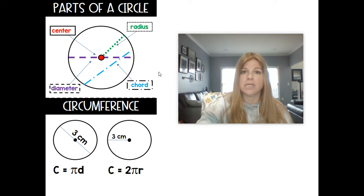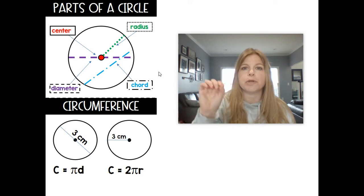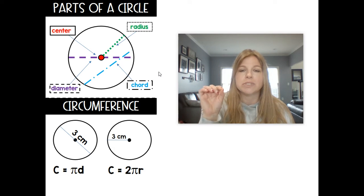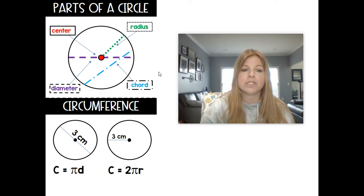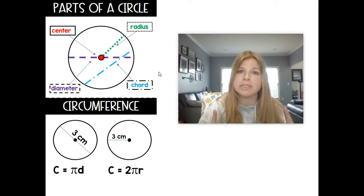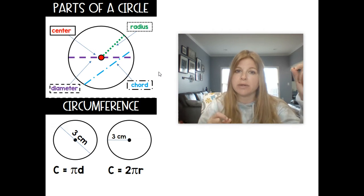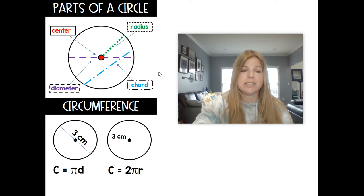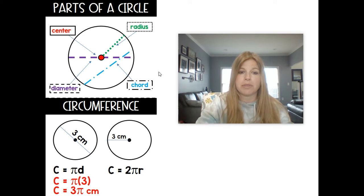The circumference of a circle is really the term we use for the perimeter. It's to calculate the measure of the distance around the circle. That's what the circumference is. There's two formulas for the circumference, which are actually the same exact thing. The first one is C, circumference, equals pi times D, where D stands for the diameter. In that first example, 3 centimeters is the entire diameter, and we know it's a diameter because it stretches from one edge of the circle to the other edge, and it goes through the center. If it doesn't go through the center, then it's not the diameter. So the formula is simple. I would just do pi times that diameter 3, and that would be my result, 3 pi centimeters.